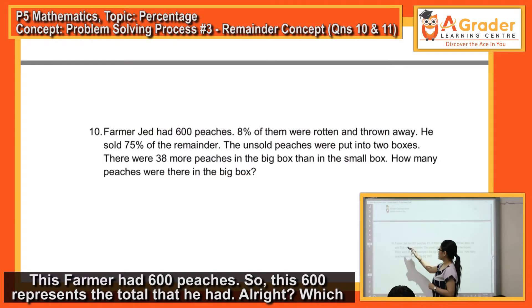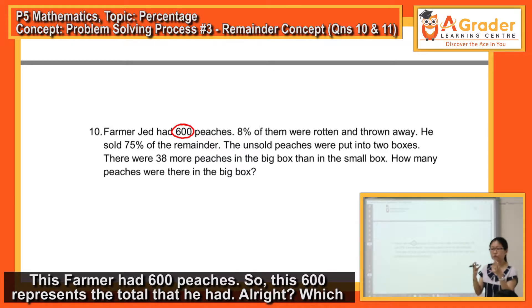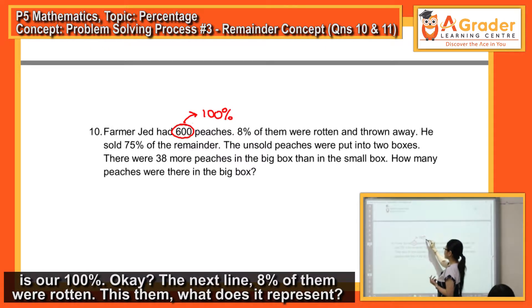Okay, this farmer had 600 peaches, so this 600 represents the total that he had, which is our hundred percent.